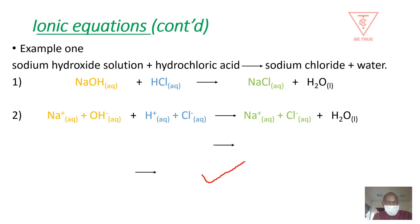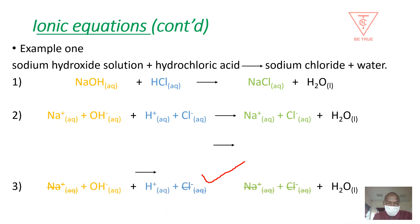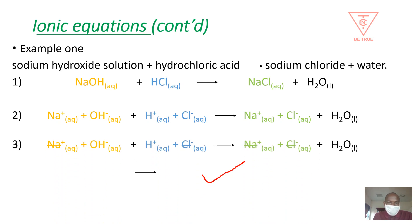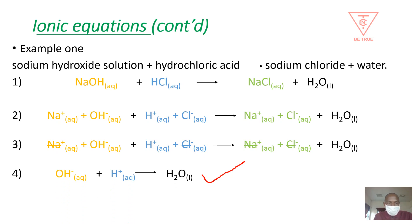Don't forget that the charge on an ion — for example the sodium ion — depends on the valency of that element. Step three: cross out the ions appearing on both sides. The sodium ion appears on both sides, so we cross it out; the chloride ion appears on both sides, so we cross it out. What remains is our ionic equation: the hydroxyl ion reacting with the hydrogen ion to form water. Our ionic equation is ready.